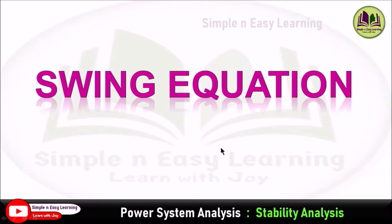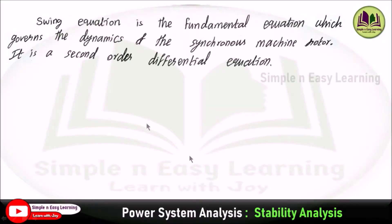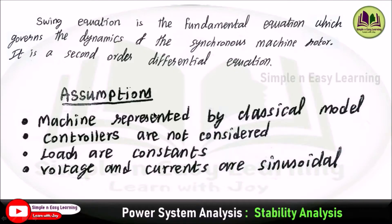We are going to discuss power system stability analysis, specifically deriving the swing equation. The swing equation is the fundamental equation which governs the dynamics of the synchronous machine rotor, and it is a second-order differential equation. The basic assumptions are: the machine is represented by a classical model, controllers are not considered, loads are assumed to be constant, and sinusoidal voltage and current are considered.